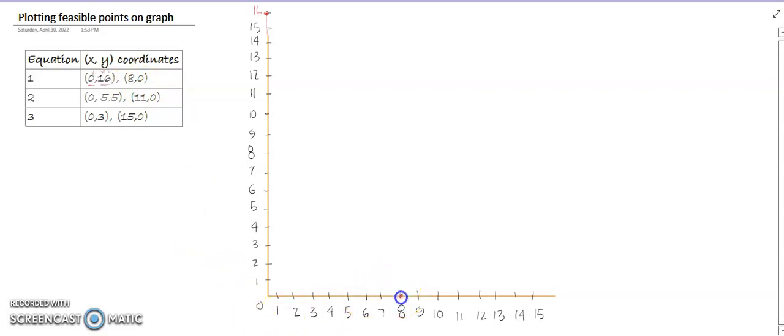For the second coordinate from equation number 1, we have 8,0 - 8 on x1 and 0 on x2. So we have got 2 points, and now we have to create a line which will be crossing from these two points.